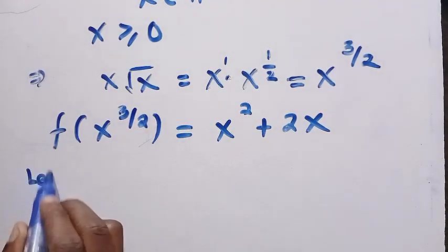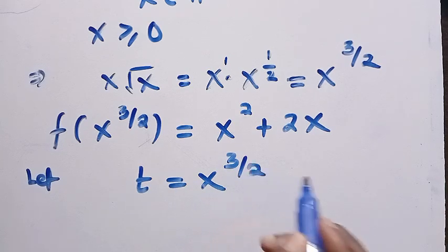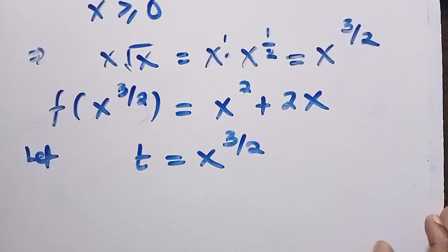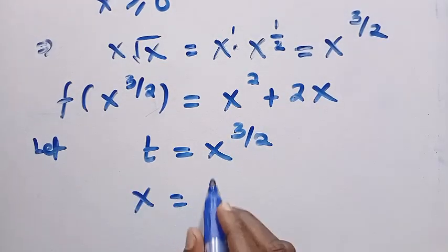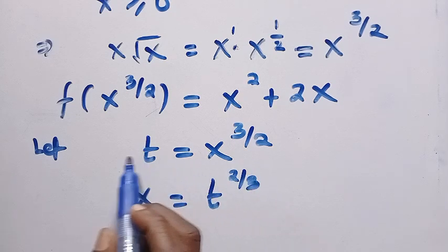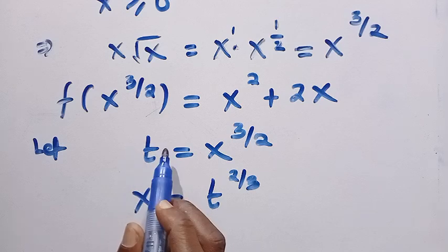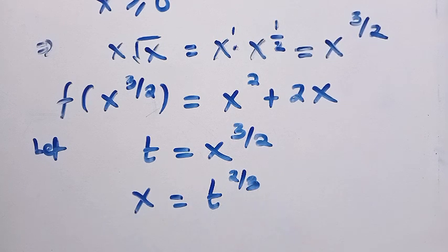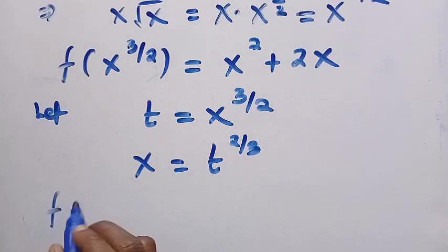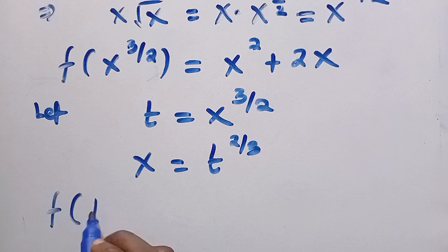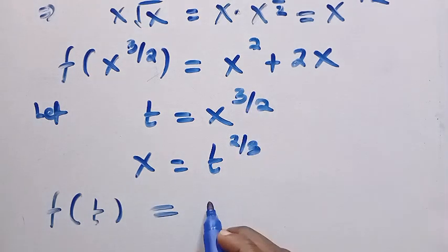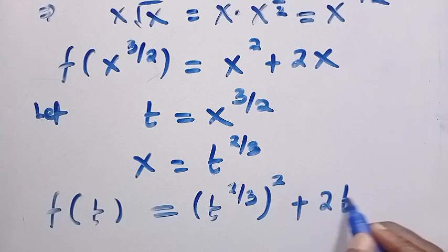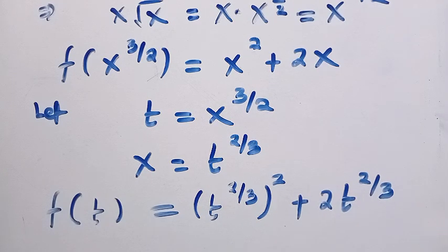We are going to let t equal x raised to the power of 3 over 2. Having t equals x to the power of 3 over 2, we find x by raising both sides to the power of 2 and then to the power of 1 over 3, giving x equals t raised to the power of 2 over 3. Then we substitute back: instead of f of x to the power of 3 over 2, we write f of t, and instead of x we substitute t to the power of 2 over 3, giving f of t equals t to the power of 2 over 3, all raised to the power of 2, plus 2t raised to the power of 2 over 3.